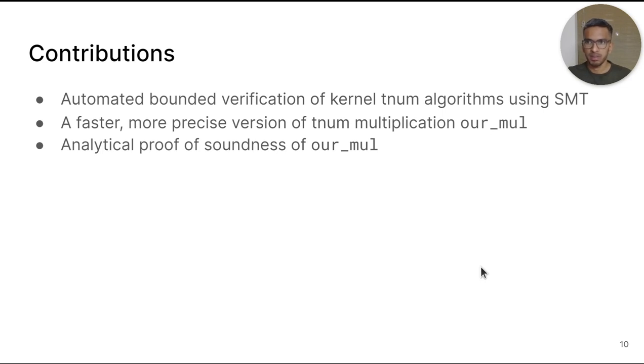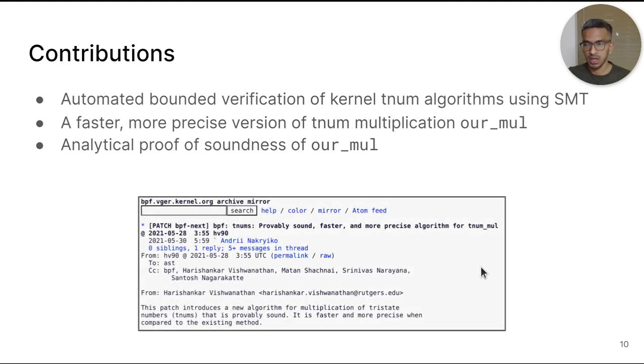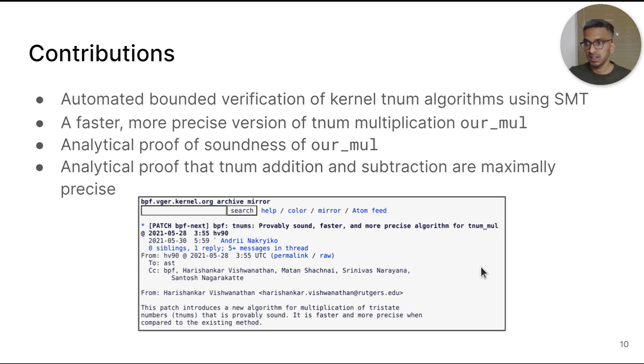This led us to developing our own multiplication algorithm, which we call our_mul. In the paper, we present an analytical proof of its soundness for operands of unbounded bit width. Our new algorithm is more precise and 33% faster than the existing algorithm. It has already been merged into the latest Linux kernels. Also, in the paper, we present a proof of why the addition and subtraction operations defined in the Linux kernel are maximally precise. In the interest of time, I will focus on our contribution related to TNUM multiplication.